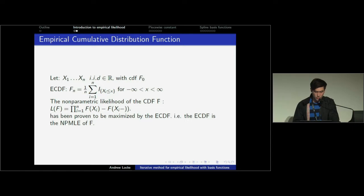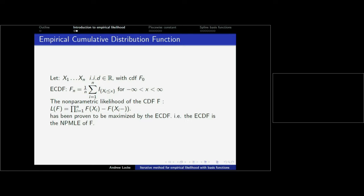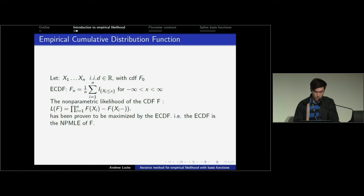First, we define the empirical CDF. It's just a step function increasing by 1 over n at each data point. From there, we also introduce the non-parametric likelihood. The non-parametric likelihood is just the product of the PDFs. This is kind of like a PDF - it's the difference between the CDF at the X point and just before that. It's been shown that this non-parametric likelihood is maximized by the empirical cumulative distribution function. It's a useful idea to use this.